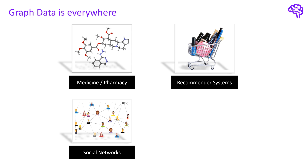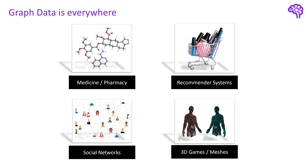People can have features such as age, gender, favorite music, and so on. Finally, you can also find graph structures in 3D games where objects are usually modeled as a polygon mesh, which is a collection of vertices, edges, and faces. These were just a few examples to give you an idea of how much graph data is available.